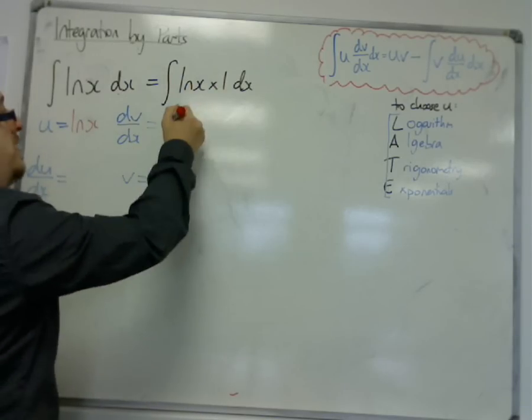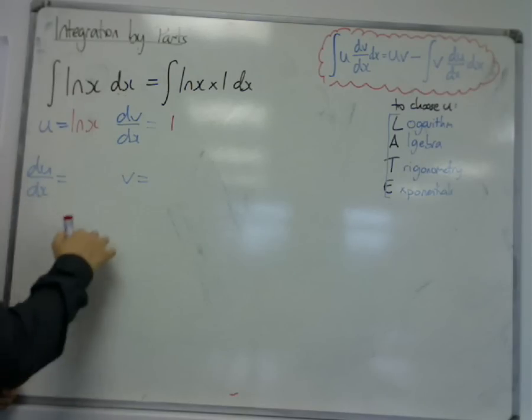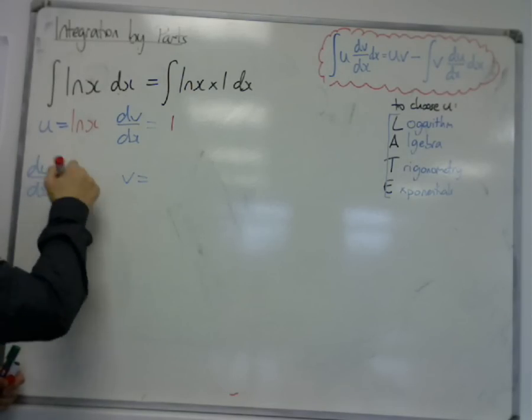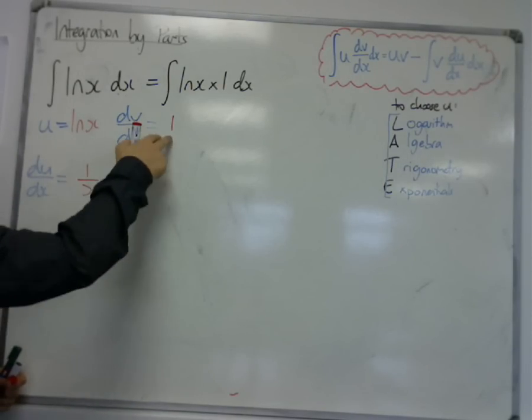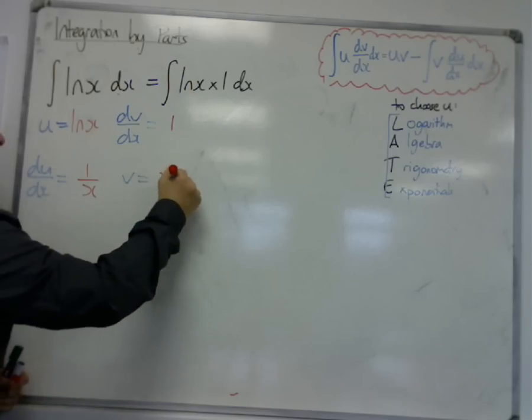And the dv by dx is going to be 1. So that when I differentiate u, this log x, I get 1 over x, and when I integrate 1, I get x.